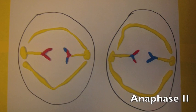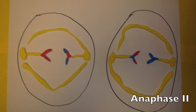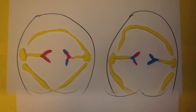In anaphase II, the chromosomes split so that a chromosome with only one chromatid heads towards each pole.